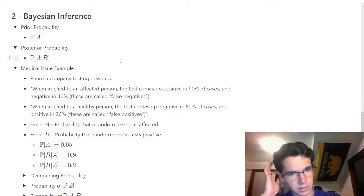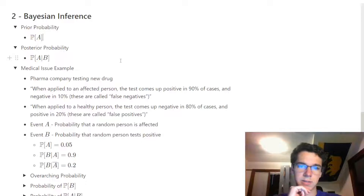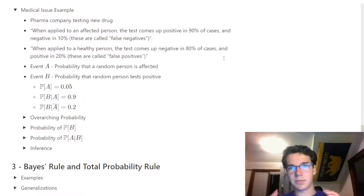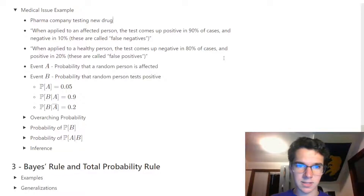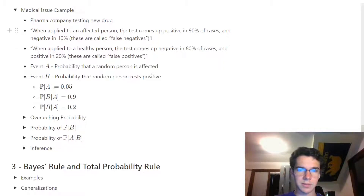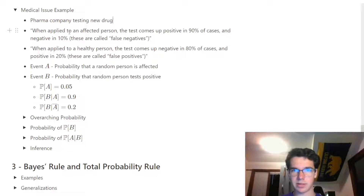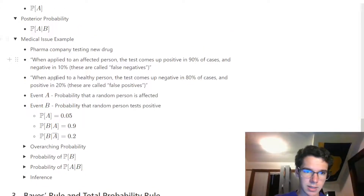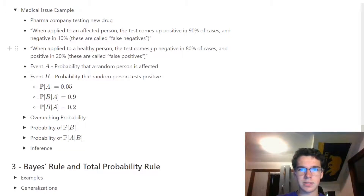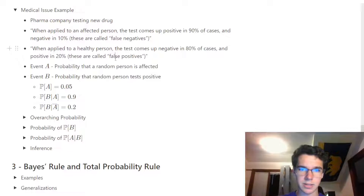Let's look at the medical issue example. A pharmacy company is testing a new drug. When the drug is applied to an affected person, the test comes up positive 90% of the time and negative 10% of the time — those 10% are false negatives, because the person is affected but the test comes out negative. When the drug is applied to a healthy person, the test comes up negative 80% of the time and positive 20% — those are false positives.